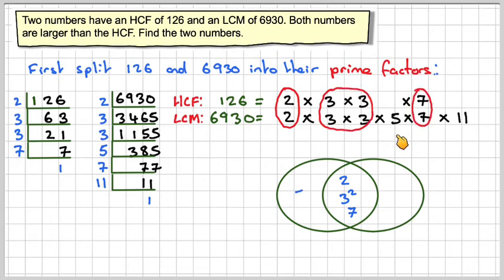Which means if we want the LCM, and both numbers have to be bigger than the HCF, we put the 5 here and the 11 here. One of the numbers will be the product of all these numbers here, and the other number will be the product of all these numbers here.